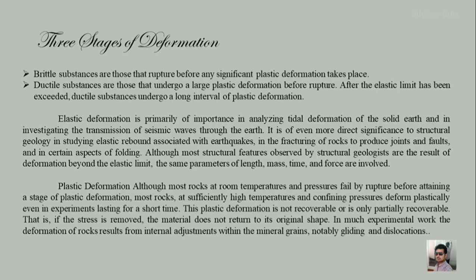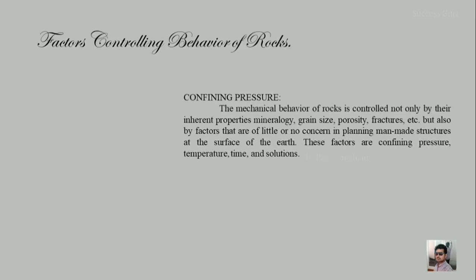At surface level deformation is mostly of the rupture type, but when rock is under confining pressure deep below the surface, it may behave differently. We will now see what factors control the behavior of rock. The mechanical behavior of rock is controlled not only by inherent properties — like mineralogy, grain size, porosity, and fractures — but also by external factors like confining pressure, temperature, time, and solution, which are not related to the rock's origin.